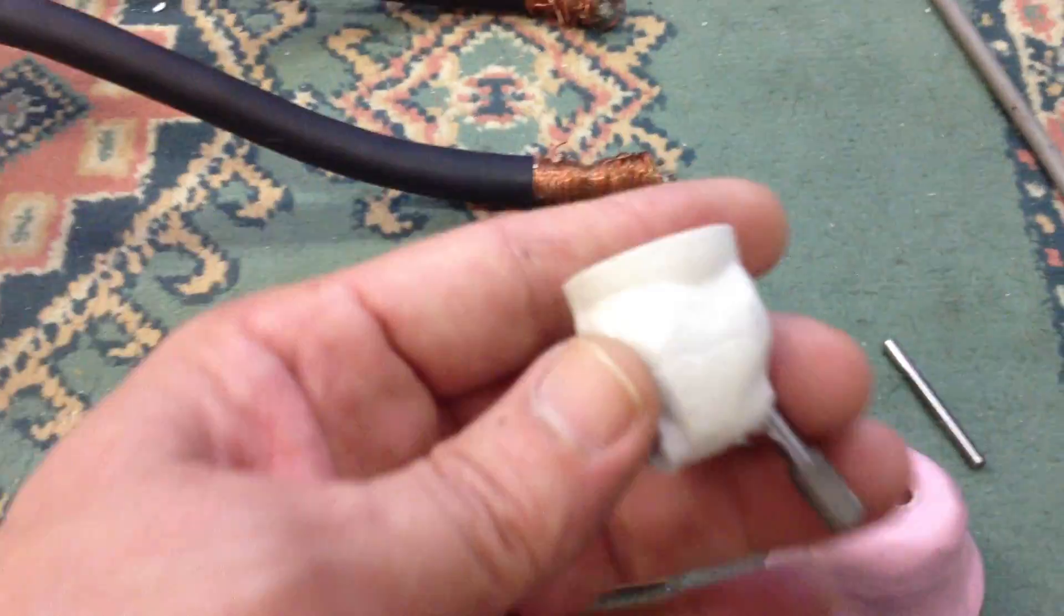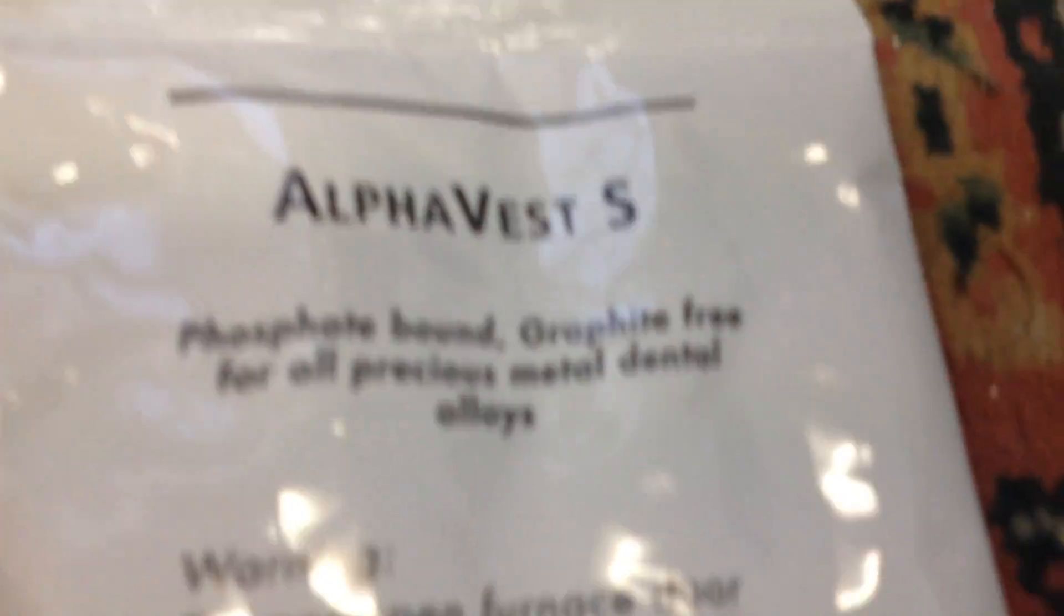This is a crucible here which I've made just out of refractory material. That's the phosphate bonded refractory material that I'm using there.